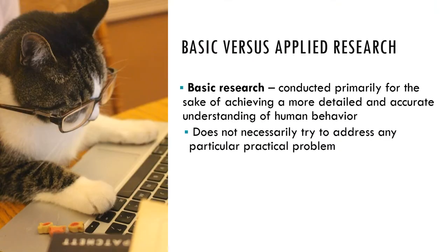Basic versus applied research. Scientific research is often classified as being either basic research or applied research. Basic research in psychology is conducted primarily for the sake of achieving a more detailed and accurate understanding of human behavior without necessarily trying to address any particular practical problem. For example, researchers simply trying to understand whether women talk more than men, or whether men and women talk similar amounts — that's not a particular problem they're trying to address; they're really just trying to understand more about human behavior.